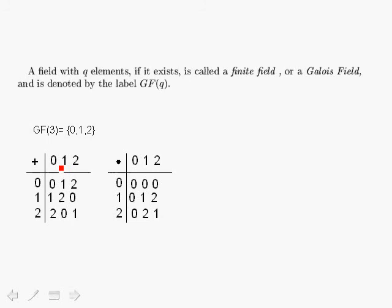In GF(3) addition: 0+0=0, 1+0=1, 2+0=2. For 2+2, we get 1, similar to adding modulo 3. In Galois fields, we do addition and multiplication modulo a prime polynomial, but in this case it turns out the same as modulo-3 addition. For multiplication, 2×2=4, and modulo 3 that equals 1. Multiplying 1 by 2 gives 2. A very important Galois field has two elements — 0 and 1, the binary elements — which is fundamental to coding.